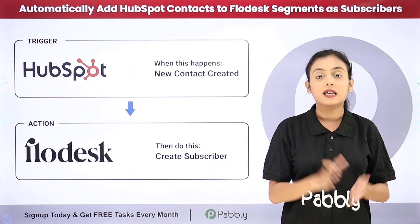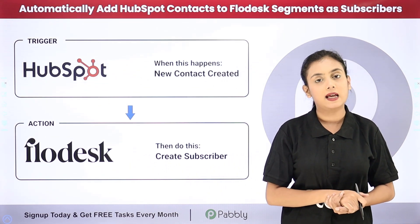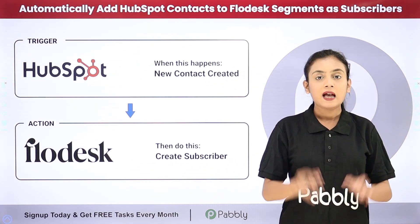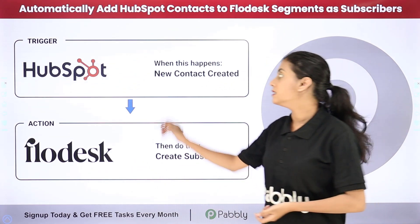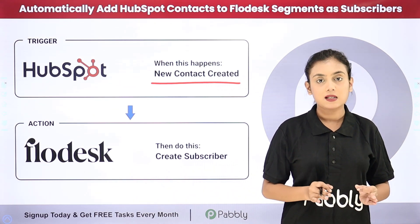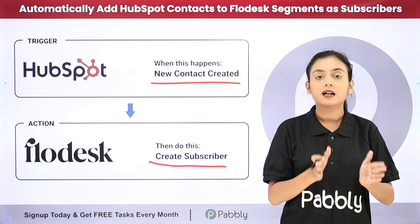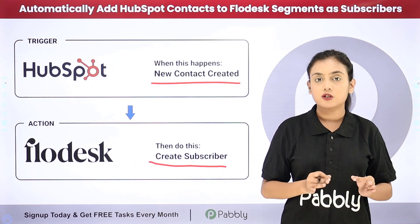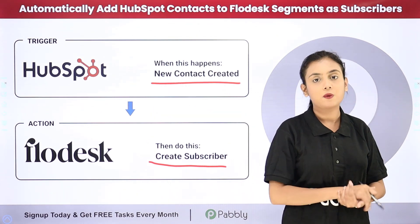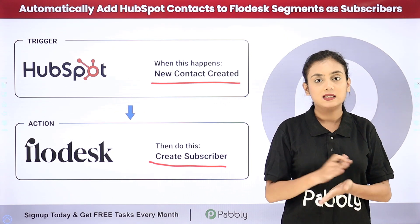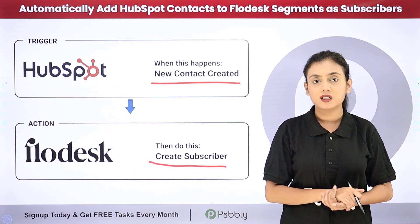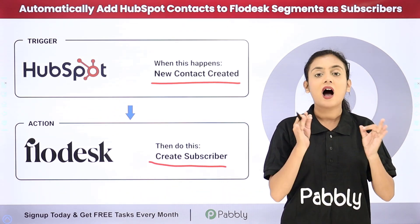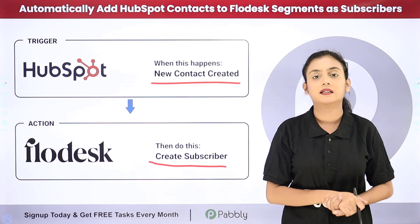I am an owner of a business in which I maintain the contact details of my customers with the help of HubSpot, and with the help of Flowdesk I do the email marketing for my customers. My objective is that as soon as a new contact is added in my HubSpot account, a subscriber should be created in my Flowdesk account, added to different segments. Contacts are created with different countries selected, and I have created segments in my Flowdesk account per country, so I can send emails according to the geographical region and the segment they are added in.